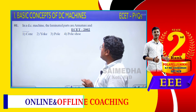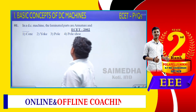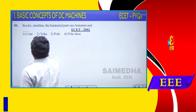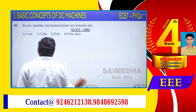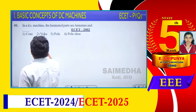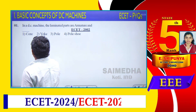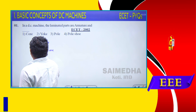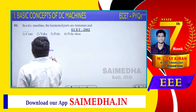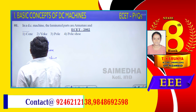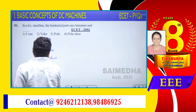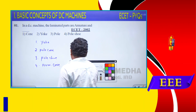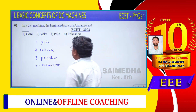The laminated parts in the DC machine are the armature and the pole shoe. The main parts of the machine are: the yoke, the pole core, the pole shoe, and the armature core.